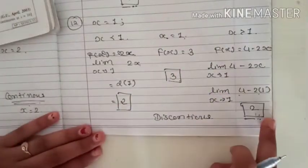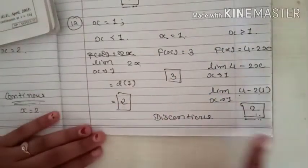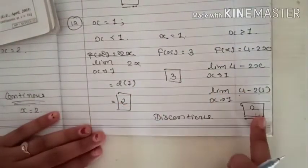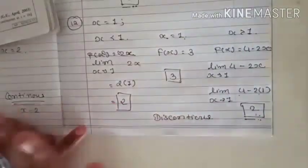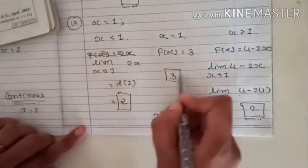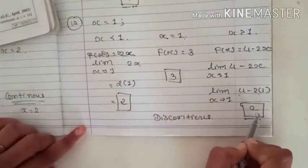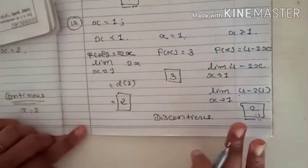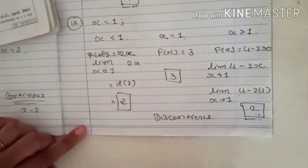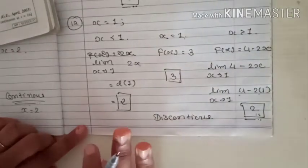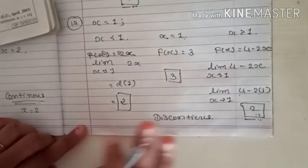If all three answers are equal, the function is continuous. If the three answers are not equal, the function is discontinuous.